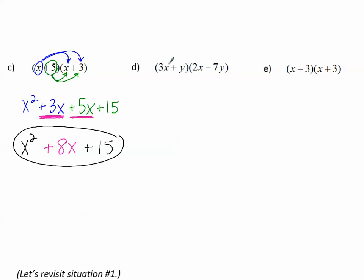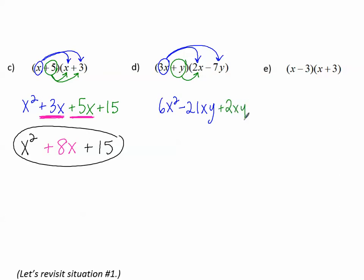Binomial times binomial. Take 3x and distribute: 3x times 2x — 3 times 2 makes 6, x times x makes x squared, so 6x squared. Then 3x times negative 7 makes negative 21xy. Now distribute positive y to both terms: positive y times 2x is positive 2xy; positive y times negative 7y is negative 7y squared. Combining like terms: 6x squared is the only x squared; negative 21xy and positive 2xy combine to make negative 19xy; and we only have negative 7y squared.